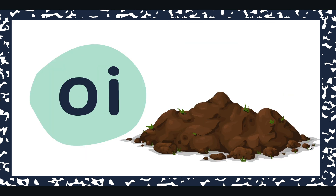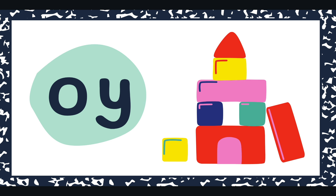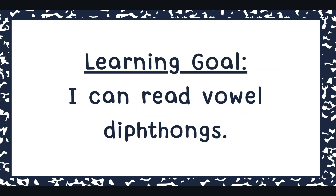Our learning goal was all about practicing OI and OY — saying "oi." Our learning goal said: I can read vowel diphthongs, and that's exactly what we practiced today. Friend, you did a fantastic job. Make sure that when you see OI or OY, you're saying "oi." Happy reading!